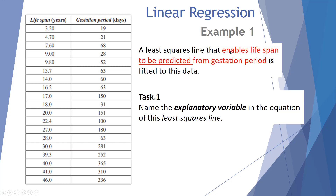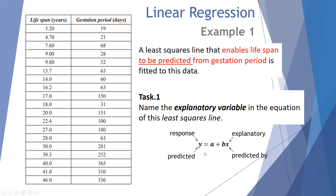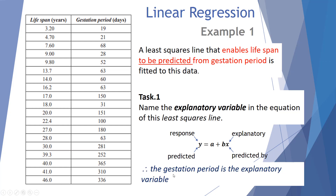It says here that the least squared line will enable lifespan to be predicted from gestation period. Here's our general equation: y equals a plus bx, straight from VCAA. We know that y is the response variable and x is the explanatory variable. In everyday terms, y can be predicted from x. So lifespan is predicted from gestation period, meaning gestation period is the explanatory variable.